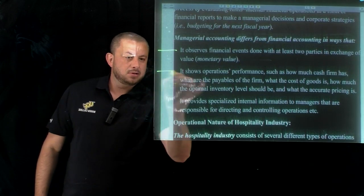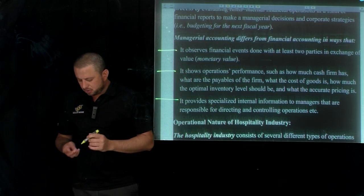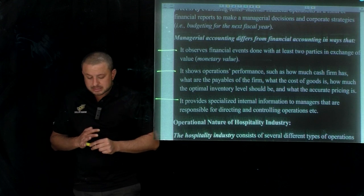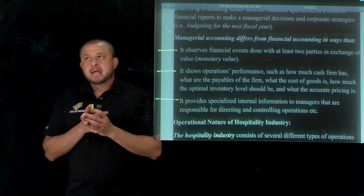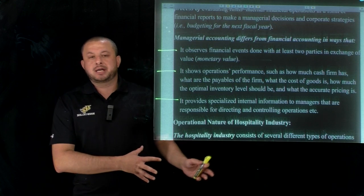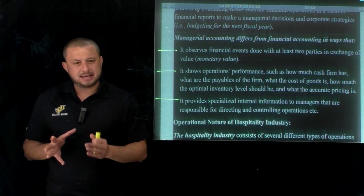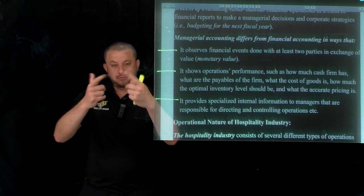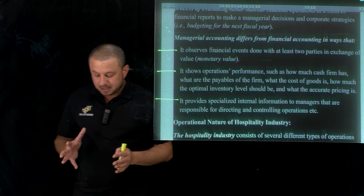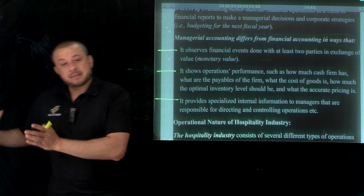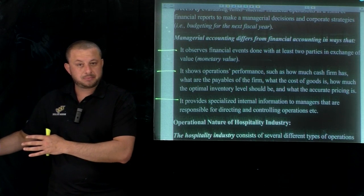First, managerial accounting observes data from financial accounting concepts, then processes that data, and puts the end product on the table for the decision-making process. It observes financial data, processes it, and produces outputs used for internal decision-making.